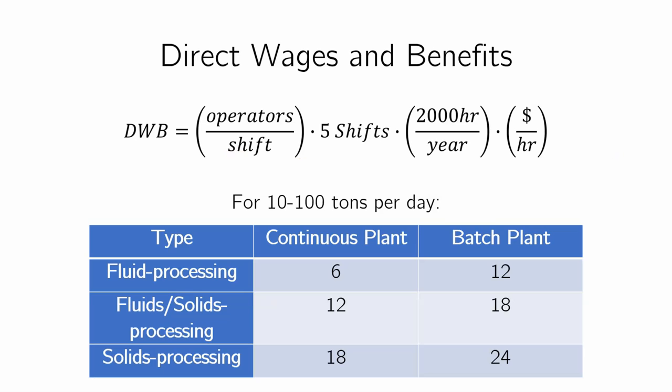To explain this: why 5 shifts? If we assume the plant operates 24/7, the typical week has 168 hours, and a typical operator works a 40-hour week, that gives 4.2 shifts. We round up to 5 to account for vacations, sickness, and similar factors. The 2,000 hours per year comes from 40 hours per week times 52 weeks per year, which gives approximately 2,000 hours. The hourly salary completes the dimensional analysis to yield a yearly sum.